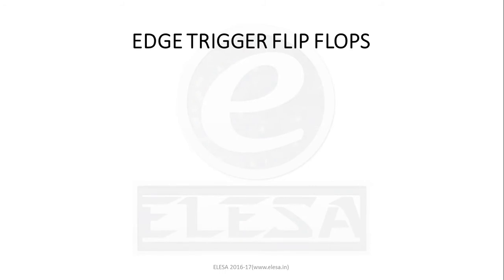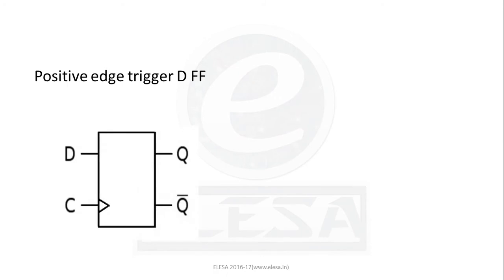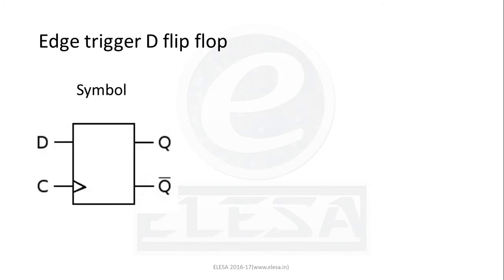Clocked flip-flops may be positive edge-triggered or negative edge-triggered. Positive edge-triggered flip-flops are those in which state transitions take place only at a positive-going, low-to-high edge of the clock pulse. Negative edge-triggered flip-flops are those in which state transitions take place at a negative-going, high-to-low edge of the clock signal. Positive edge-triggering is indicated by a triangle at the clock terminal, and negative edge-triggering is indicated by a triangle and a bubble at the clock terminal. The edge-triggered D flip-flop has one data input line and a clock input.